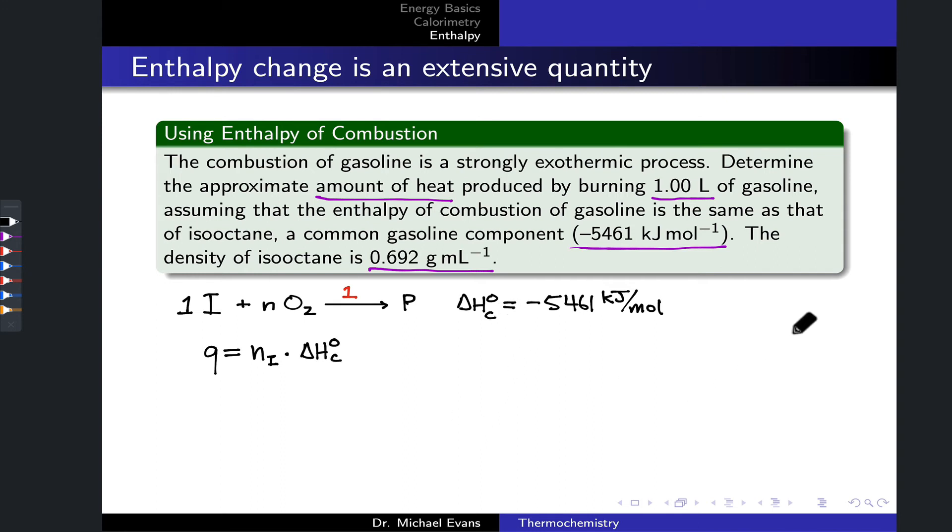How do we determine the number of moles of isooctane? We know the volume of isooctane that we've got. We'll assume the entire gasoline sample is nothing but isooctane, and we have a density in grams per milliliter. I'm going to find the mass of isooctane first by taking that one liter and doing a straightforward conversion to milliliters: 1,000 milliliters per liter.